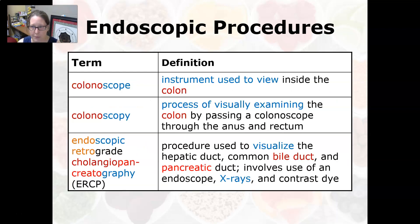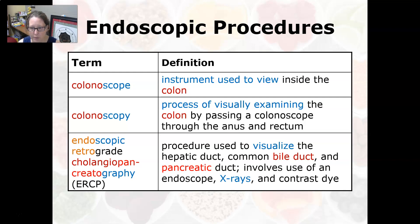Now for endoscopic procedures: a colonoscope is an instrument used to view inside the colon. Colonoscopy is the process of visually examining the colon by passing a colonoscope through the anus and rectum, then up through the sigmoid colon, examining the entire colon.